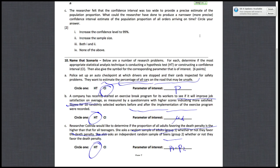And, the reason why it's proportion instead of mean is because she's determining if the proportion of all adults favoring the death penalty is higher than that for all teenagers. Alright, and that concludes page...